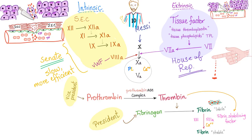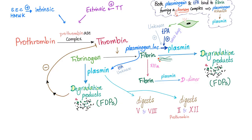Secondary hemostasis is the process of formation of the thrombus by forming fibrin fibers and trapping the red blood cells and stabilizing the fibrin. Fibrin lysis is lysing fibrin, breaking down the clot into fibrin degradation products and breaking down the stabilized fibrin into D-dimer, and fibrinogen into fibrinogen degradation products.